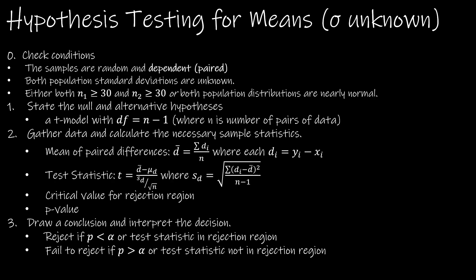This is going to be like a before-and-after situation. Even though there's going to be more than N pieces of data, there's going to be N pairs of data. The mean of paired differences requires us to find all of the differences. To find the differences, you take the second observation minus the first observation. Please put a big star next to that, because the biggest mistake I see people make is putting them in the wrong order — second minus first.